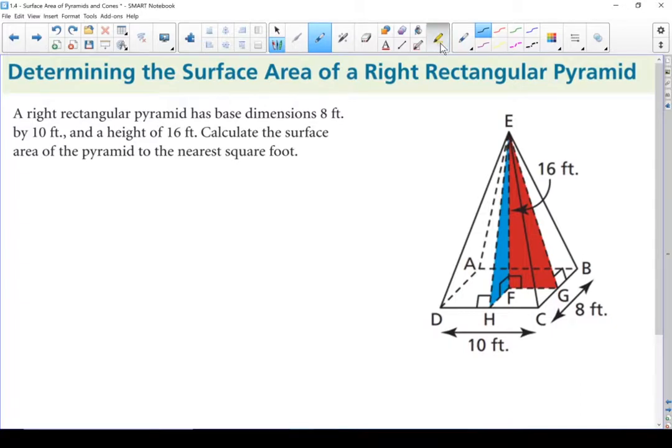There's a couple of reasons why this is a bit of a mean question. First of all, you're given the height, not the slant height, but the actual height. The other reason why it's kind of mean is because it's a rectangular pyramid, which means that the two different slant heights, this blue slant height and this red slant height, are not going to be the same.